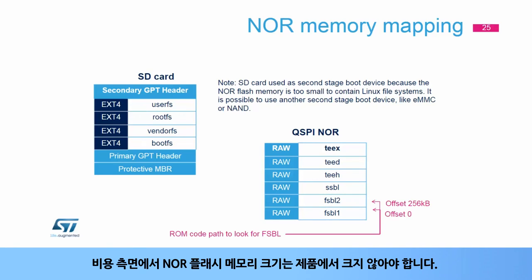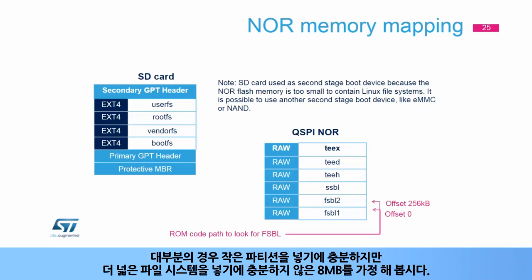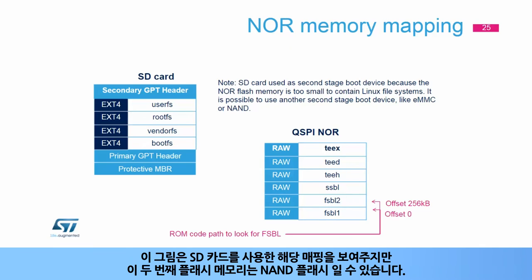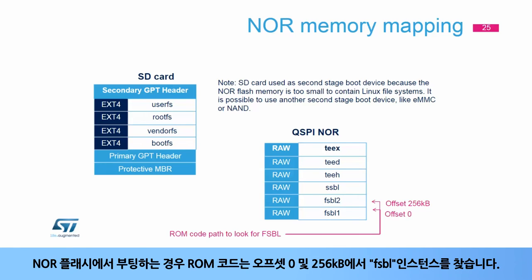For cost reasons, NOR flash memory sizes should not be very big on products — about 8 MB in most cases, which is enough for the small partitions but not big enough for the wider file systems. That is why a second flash memory device is needed to store those file systems. The figure shows the corresponding mapping with an SD card, but this second flash memory could be NAND flash. In case of boot from NOR flash, the ROM code looks for FSBL instances at offsets 0 and 256 KB.